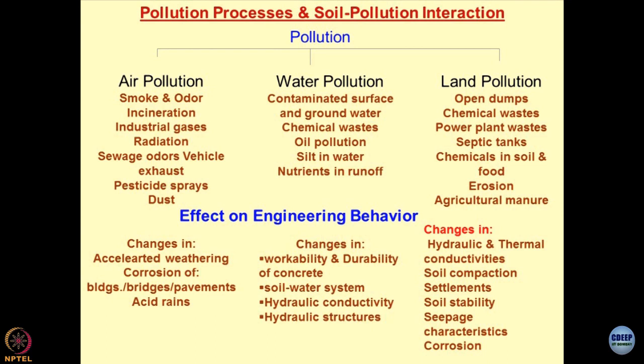Now, what is the effect of these pollutions on engineering behaviour? When air pollution occurs, we have accelerated weathering of concrete or cement, corrosion of buildings, bridges, pavements and acid drains. Recently, many bridges were failing in Calcutta, and in a published report, pollution was identified as the main reason responsible for the collapse of those bridges, along with poor maintenance.